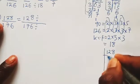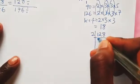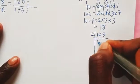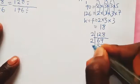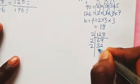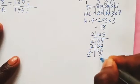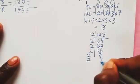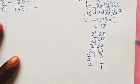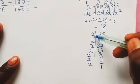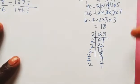Dividing 128 by 2 repeatedly: 128 → 64 → 32 → 16 → 8 → 4 → 2 → 1. That is 7 divisions by 2, so 128 = 2 × 2 × 2 × 2 × 2 × 2 × 2, which is 2 to the power of 7. Take note of that.